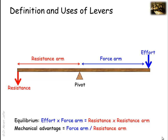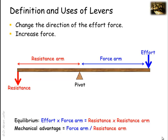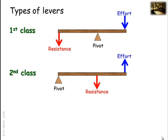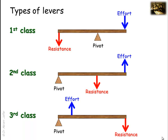Regarding the uses of levers, there are three main uses. First, change the direction of effort force — this is what is seen in first-class levers. Second, increase the force — that is what is seen in second-class levers. Third, as seen in third-class levers, there is gain of distance. So levers are of three classes: first class, second class, and third class, and each class serves a specific function.